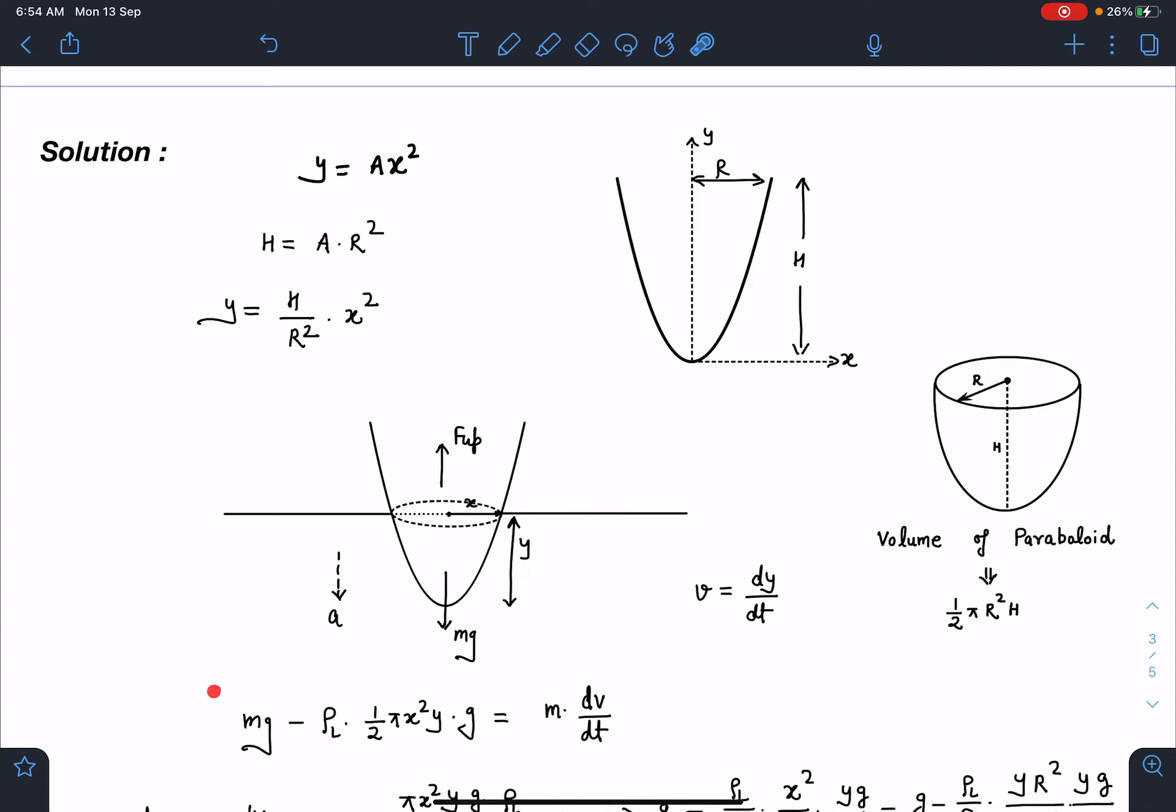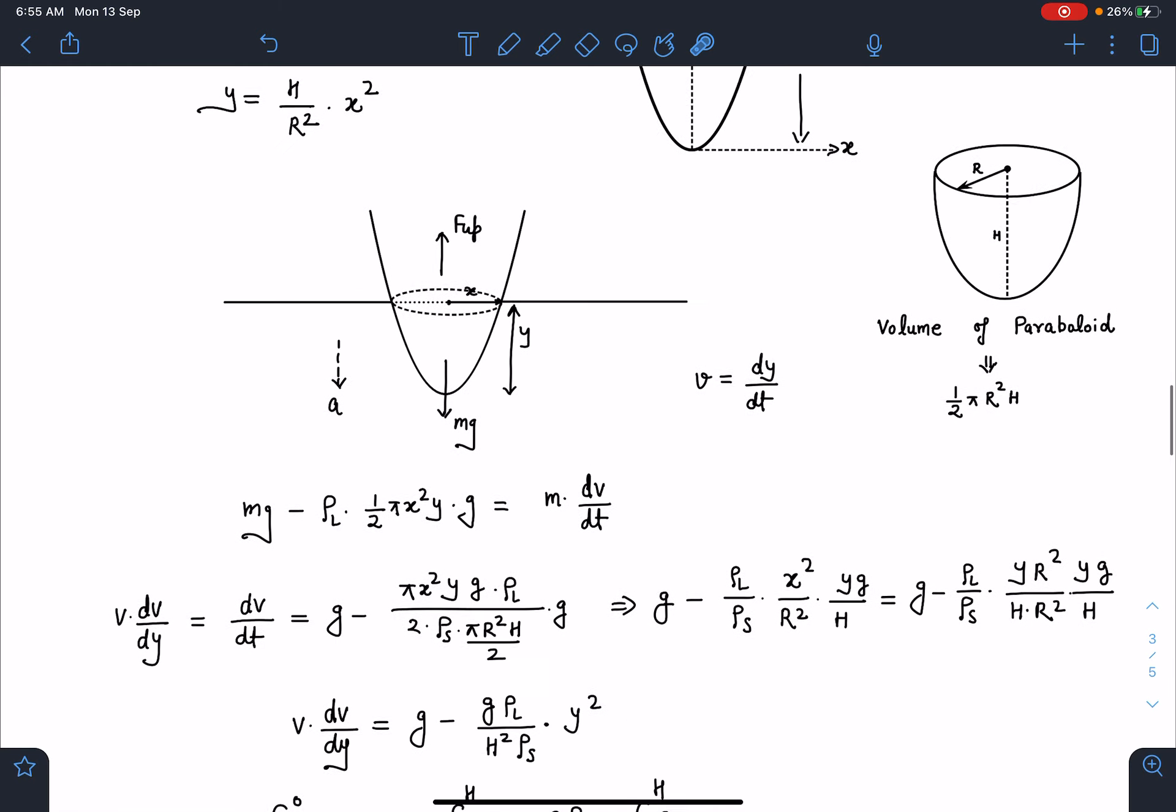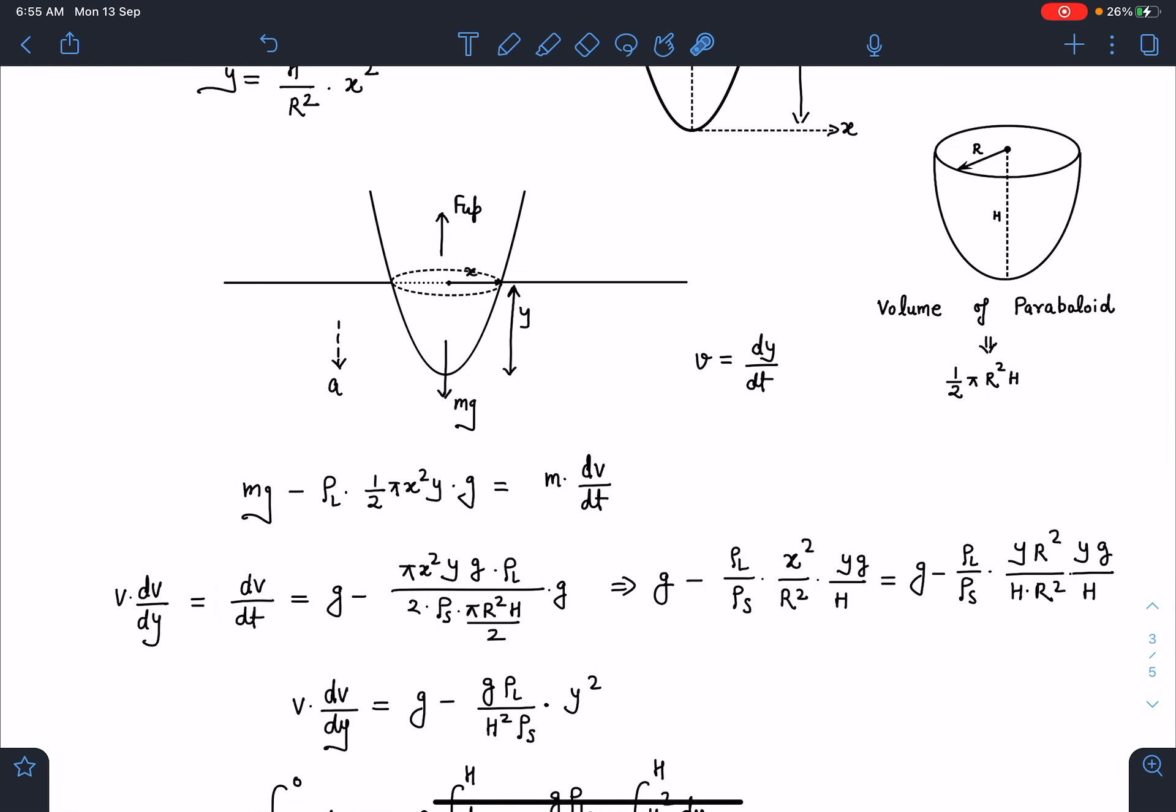So I can write the velocity of paraboloid at this moment as dy by dt. So here force equation will become mg minus buoyancy which is rho liquid into volume of solid inside into g. So I am saying this length is x and this length is y here and that is equal to m dv by dt. Now I can write this dv by dt as I will divide this by m, m of this entire solid alright.